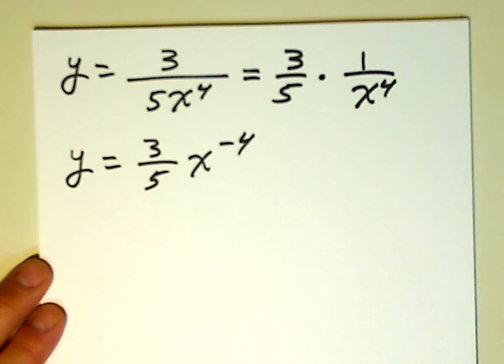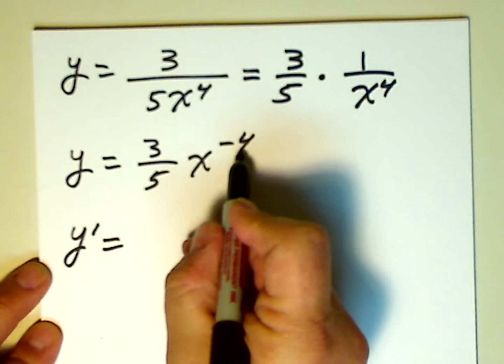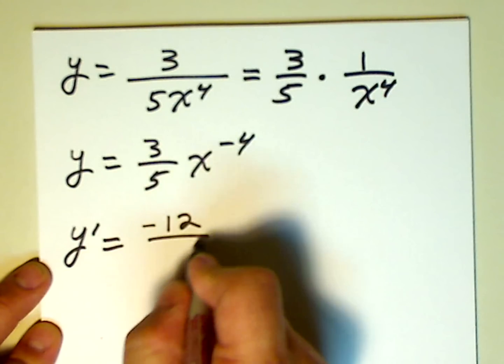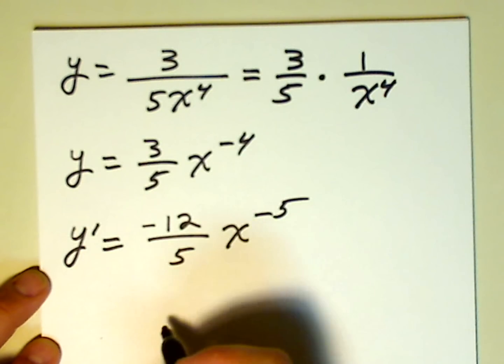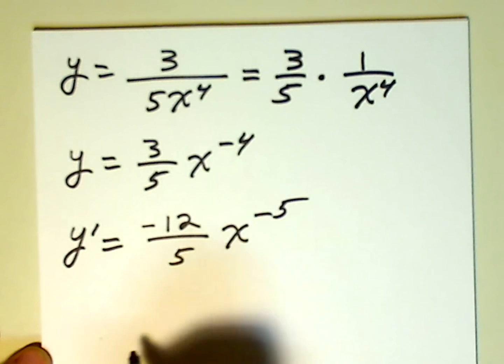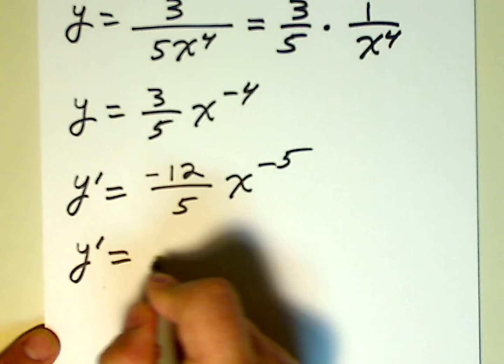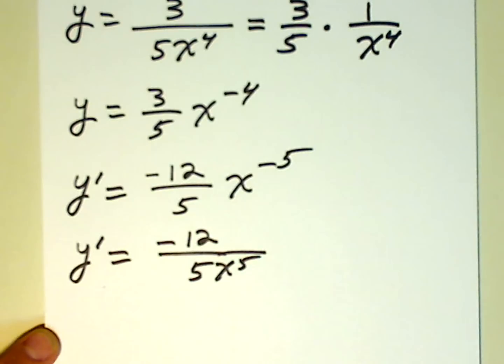And now again, it's a simple power rule problem. Y prime is equal to negative 4 times 3 is negative 12 over 5x to the 5th. And that's it. We're finished. We can just kick this variable x to the negative 5th into the denominator. So y prime is equal to negative 12 over 5x to the 5th. There we go. So that's it. That's all there was to it. See, these problems shouldn't shake up students, but they do for some reason, year after year.